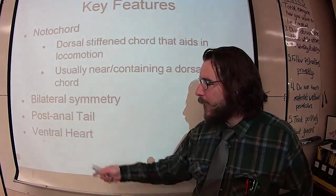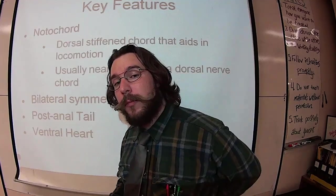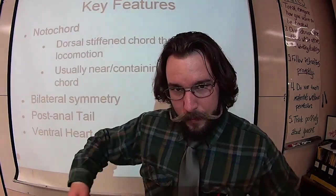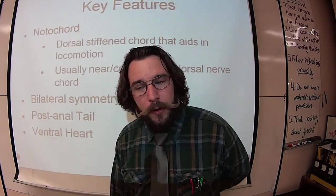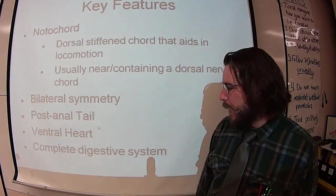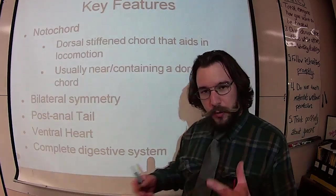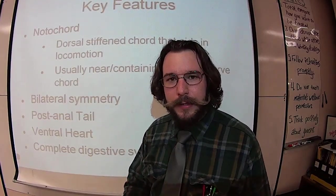We also have a ventral heart. Most of the things we've been looking at that have had hearts so far, the heart has been dorsal, the nerves have been ventral. So this whole phylum, we've flipper-rated it. Now our heart is ventral and our nerve cord is dorsal. Every member of this phylum has that as well. And a complete digestive system, including organ systems, just like back with the mollusks.